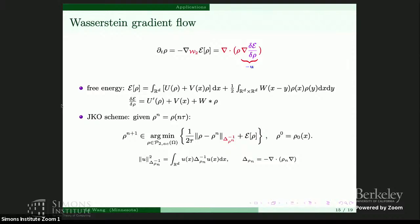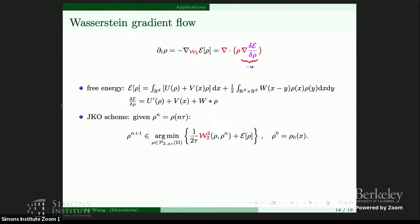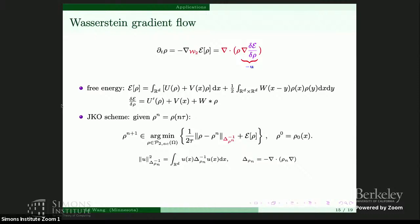A follow-up was raised about the 1/(2 tau) factor. The speaker acknowledged: the JKO approximation step is already proved, but proving that the solution to the modified problem converges to the continuum gradient flow is not easy. Numerically, approximating it this way is not a crazy idea.